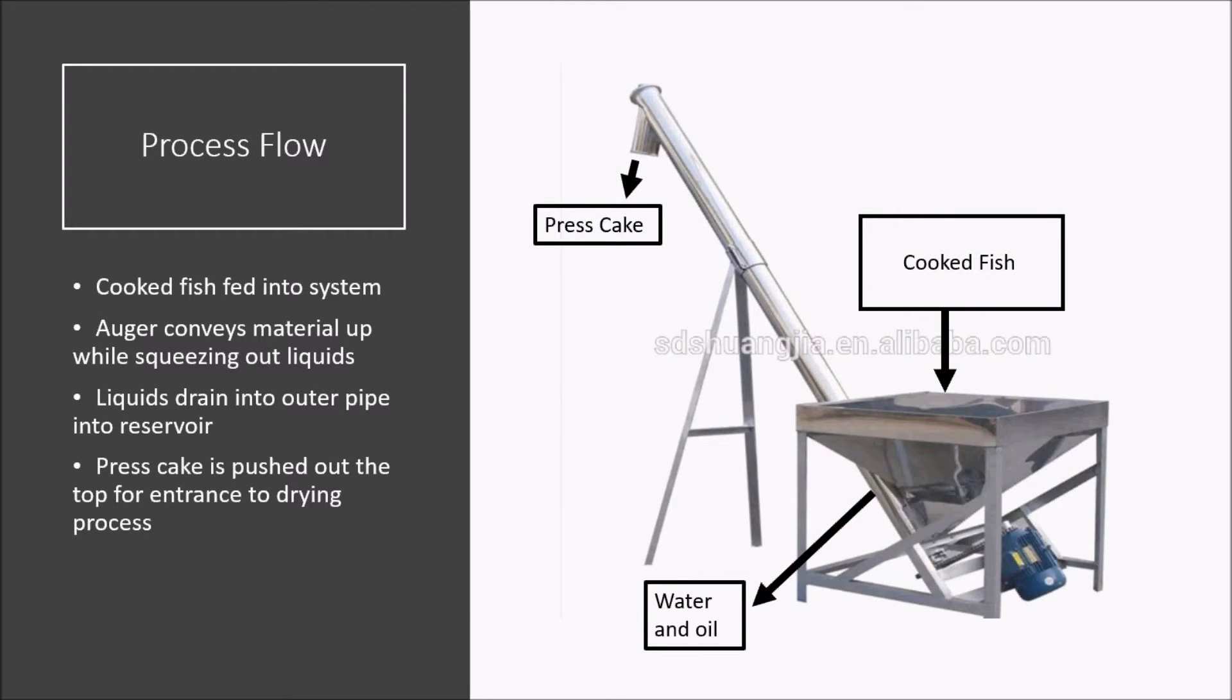The process flow for the pressing stage is relatively simple. The cooked fish goes into a reservoir where it is pushed through a pipe with the tapered screw. The liquid drains out of the perforated pipe and down to a waste reservoir. The press cake continues moving along the screw until it is deposited into a holding area for the next stage which is drying.